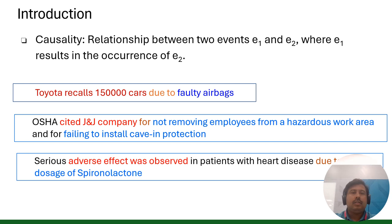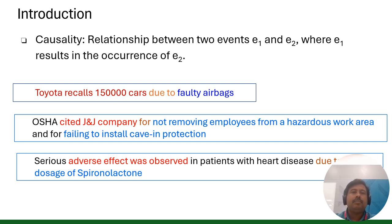In these examples, event E1 is represented by 'Toyota recalls 15,000 cars,' E2 is 'the faulty airbag,' and the relationship between E1 and E2 is a causal relationship.